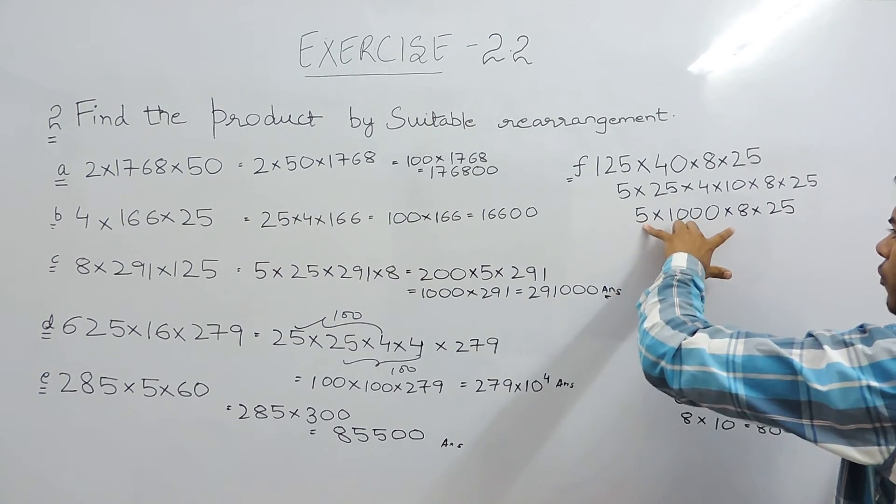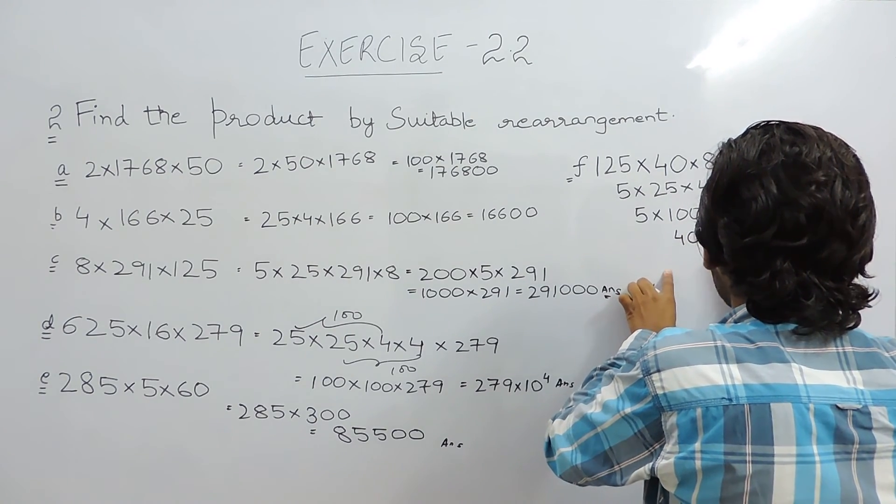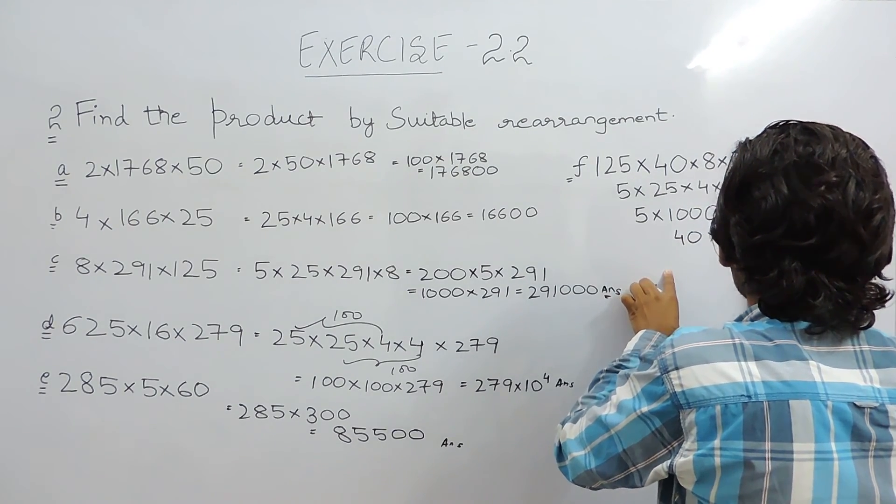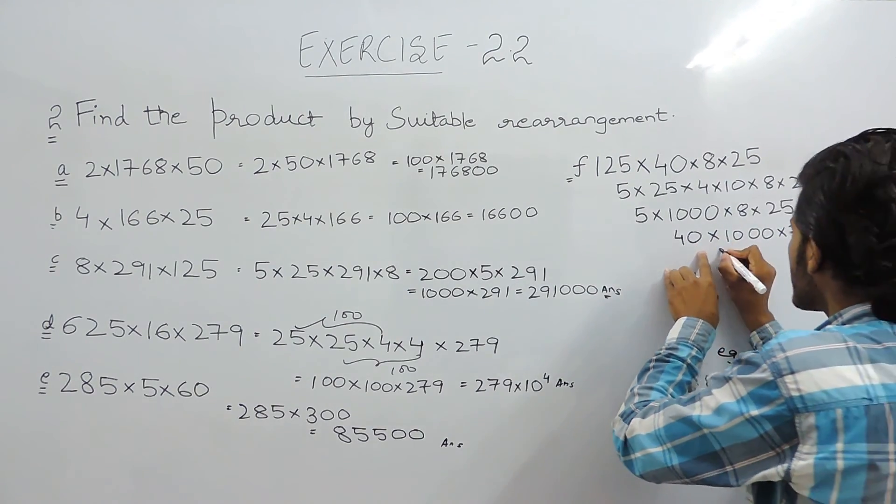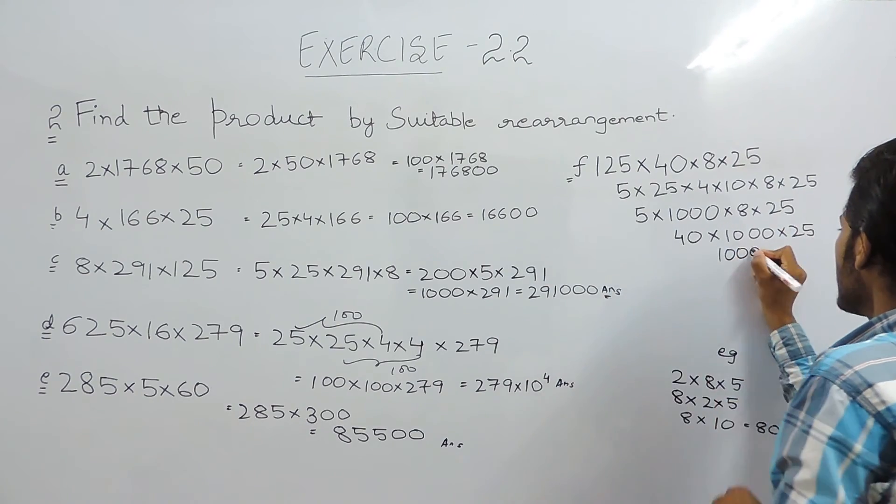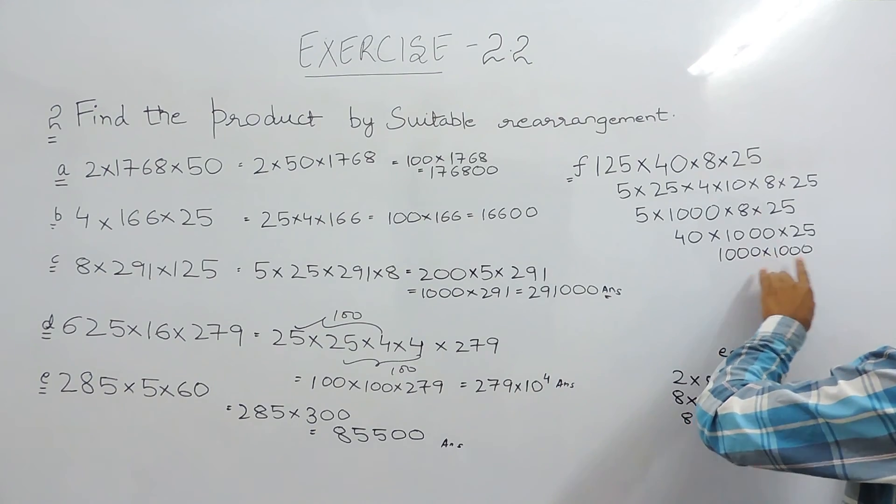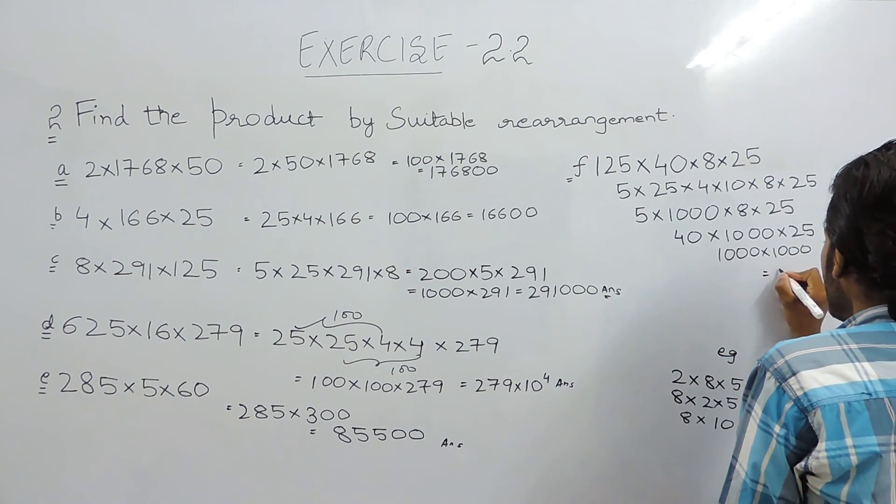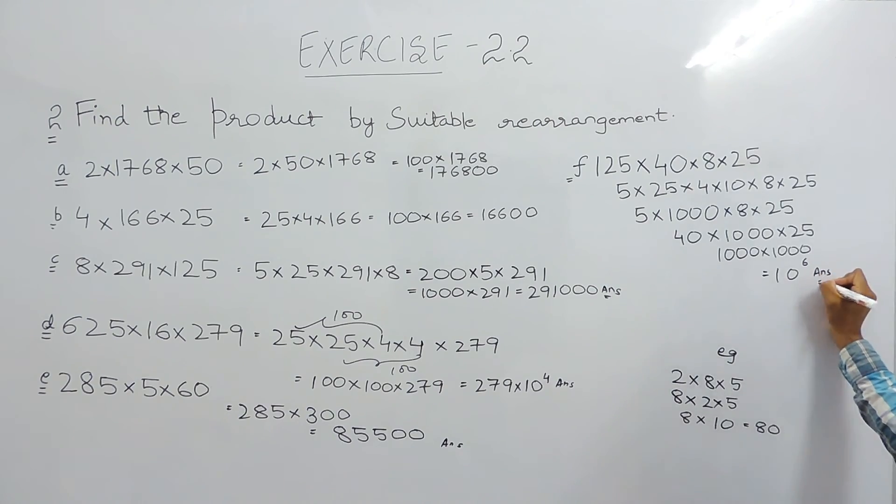So this will be 8 into 5 is 40. So 40 multiplied by 1000 multiplied by 25. 25 four's are 100 and one more zero which means 1000 into 1000. Three zeros here, three zeros here. The answer will be 10 to the power 6 which is the required answer of the sixth part.